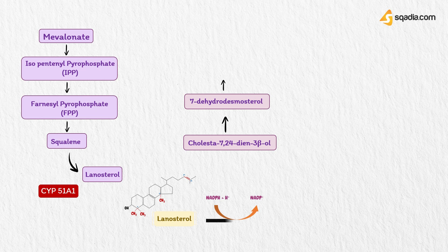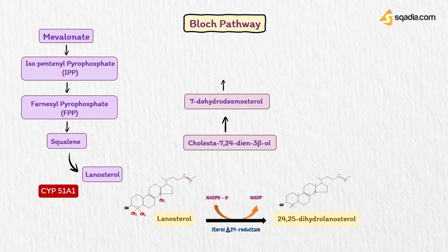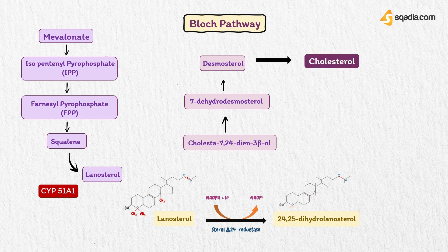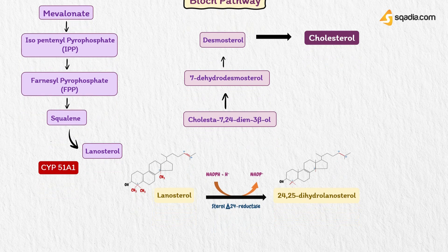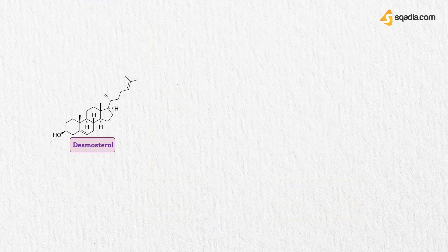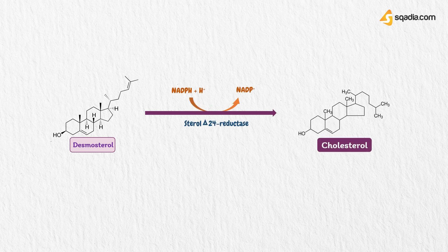An alternative to the Bloch pathway was described by Kandutsch and Russell in preputial gland tumors. Here the primary reaction is the reduction of lanosterol by sterol-24-reductase to 24,25-dehydrolanosterol, which is then converted to cholesterol by a pathway that parallels the Bloch pathway. By contrast, in the Bloch pathway, the final reaction is the reduction of desmosterol by sterol-Δ24-reductase to cholesterol. Although there is evidence the Kandutsch-Russell pathway operates in the liver, it is probably a minor pathway.